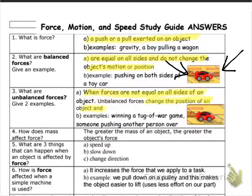Alright, number four, how does mass affect force? This was one of our just the facts. The greater the mass, the greater the object's force. Alright. And the greater the force, the greater the amount of movement. Alright, number five says what are three things that can happen when an object is affected by a force? Well, that object could speed up, it could slow down, or it could change direction.